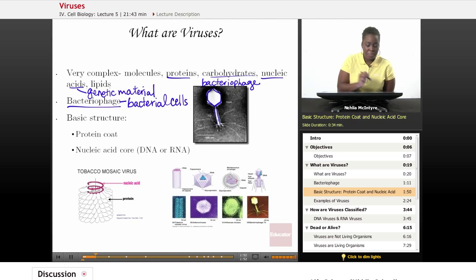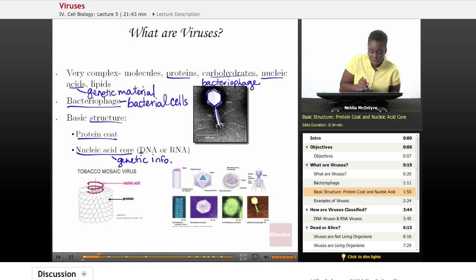Actually, the basic structure of all viruses is that they all have what we call a protein coat, and that protein coat covers and protects what's inside, which is the nucleic acid core. The nucleic acid core stores the genetic information that codes for that specific type of virus. The genetic information is found on DNA or RNA, so you have viruses that either have DNA inside their core or RNA inside their core.